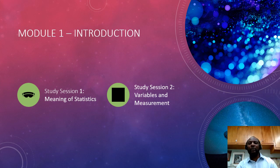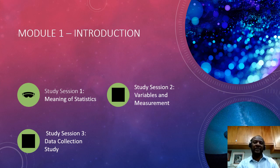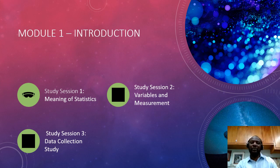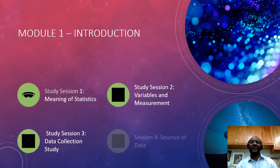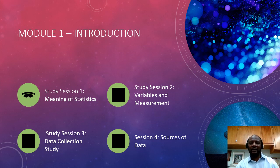In session three, we will explain how the data collection aspect is done and why it is an important first step in the research process. If you remember from session two, we talked about variables and how they guide measurements. In this study session, we'll utilize what we've learned from previous sessions and also look ahead to session four, which covers sources of data. So just relax — we're going to run through this. It's going to be fast and interesting.